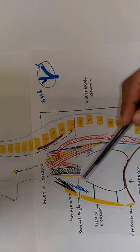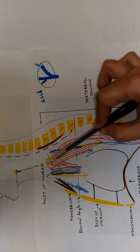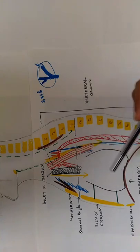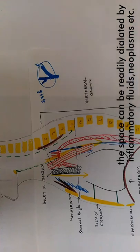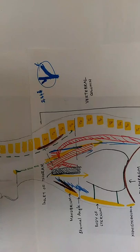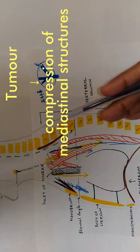There is very little loose connective tissue in between the mobile organs of the mediastinum. The space between them can be readily dilated by inflammatory fluids, neoplasms, etc. When a tumor occurs in the mediastinum it can compress the mediastinal structures and produce pressure effects.